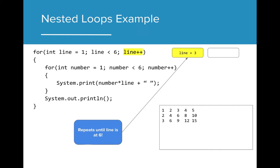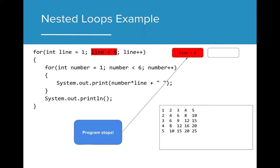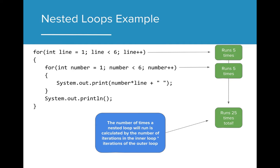Now that the outer for loop has completed, it returns to the increment and increases the value of line by 1. This process repeats each time until the value of line is greater than or equal to 6. Each iteration will print the value of line and each subsequent value in the times table. The program finally stops once line equals 6, and whatever code follows the outer for loop will execute. Something to note is that the total number of times a nested for loop is run can be calculated by the number of iterations through the outer loop multiplied by the number of iterations through the inner loop. This can be a helpful calculation when trying to figure out what to set your for loop increment and boolean conditions to.